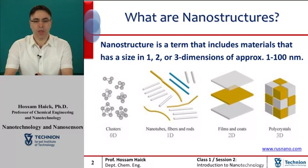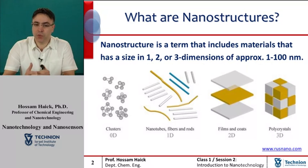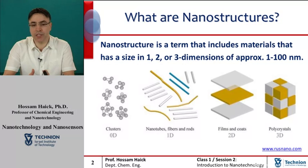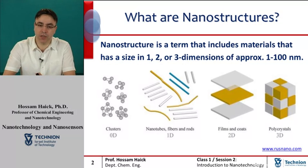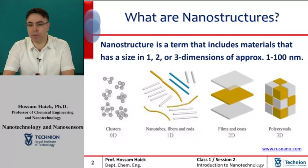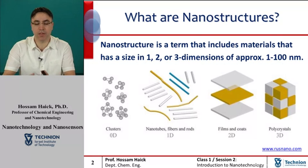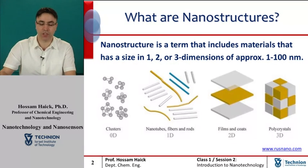Finally, bulk materials with all dimensions above 100 nanometers, but that contain zero-dimensional, or one-dimensional, and/or two-dimensional nanostructures, are termed three-dimensional nanostructures.